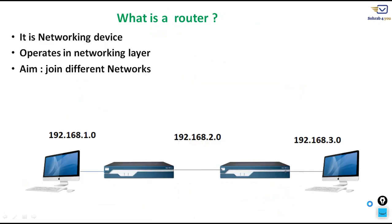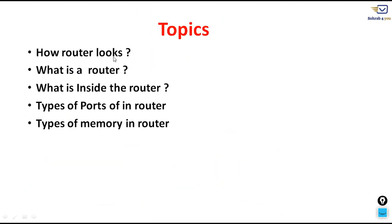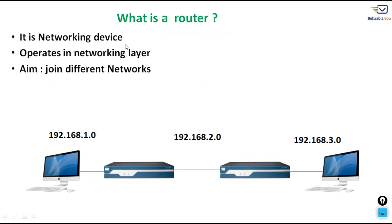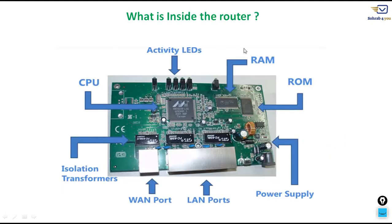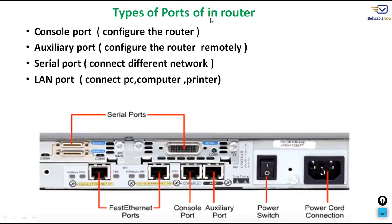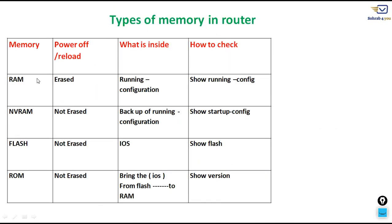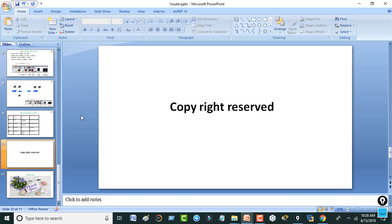We are done for today. Let's do a quick review: a router is a networking device operating at the network layer, and its main job is to join different networks. Inside the router we have CPUs, LEDs, power supplies, and memories. The port types are console, auxiliary, serial, and LAN ports. The memory types are RAM, NVRAM, Flash, and ROM. If you have any doubts, questions, or suggestions, please contact us. Till next class, take care and have a nice time. Bye!